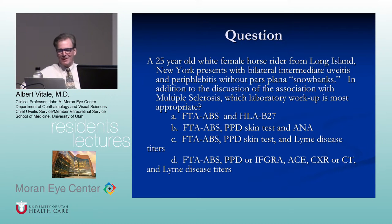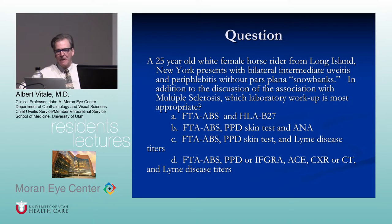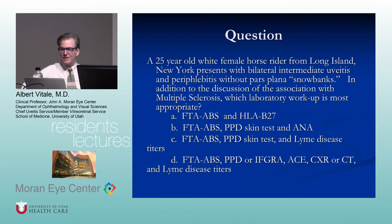A 25-year-old white female horse rider from Long Island presents with bilateral intermediate uveitis — the clues are there: from an endemic area, with peripheral phlebitis without snowbanks. The differential diagnosis of intermediate uveitis in a person from an endemic area for Lyme means you would want to order Lyme serology on this patient.